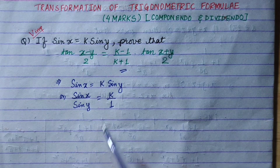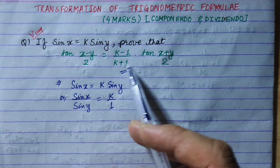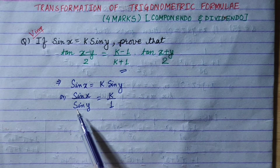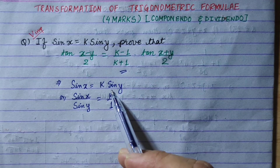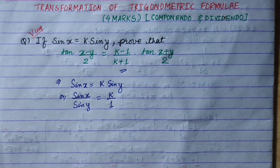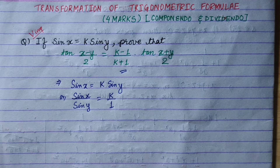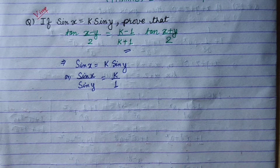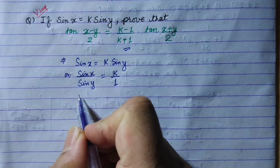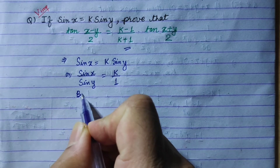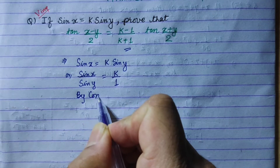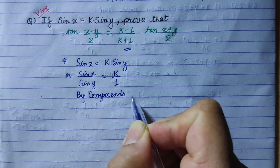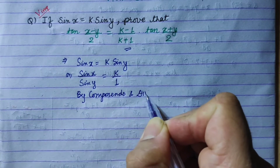This is what we can do. We will use the componendo-dividendo property. By componendo and dividendo, sin x over sin y is equal to k over 1, so we can apply componendo-dividendo to get (sin x minus sin y) over (sin x plus sin y) equals (k minus 1) over (k plus 1).